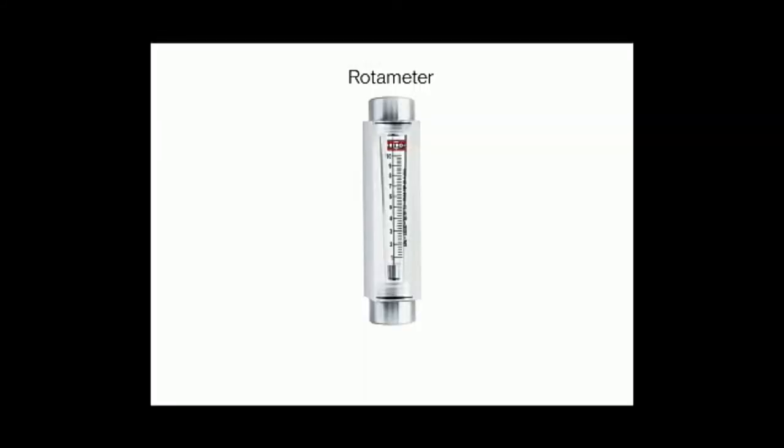Good morning. My name is Harshit Mehta and I will be discussing the rotameter and thermocouple. The rotameter is a device that measures the volumetric flow rate of a fluid in a closed tube. It belongs to a class of meters called variable area flow meters, which measure flow rate by allowing the cross-sectional area the fluid travels through to vary, causing a measurable effect.